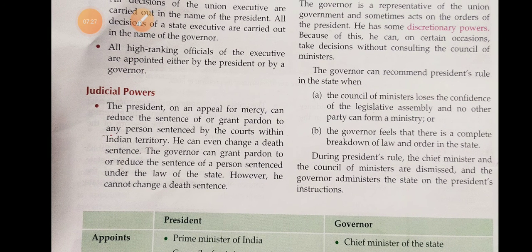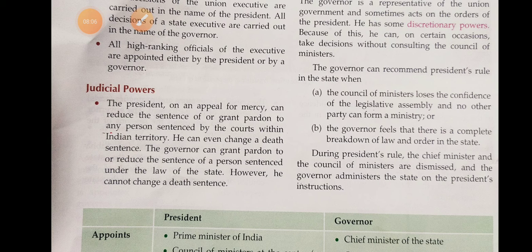On the advice of the Council of Ministers, the President can declare a general emergency. The situations for declaring emergency are: an attack from outside, a disturbance within, or a financial crisis. When there is a breakdown of law and order in a state, the President can take over the administration of that state.